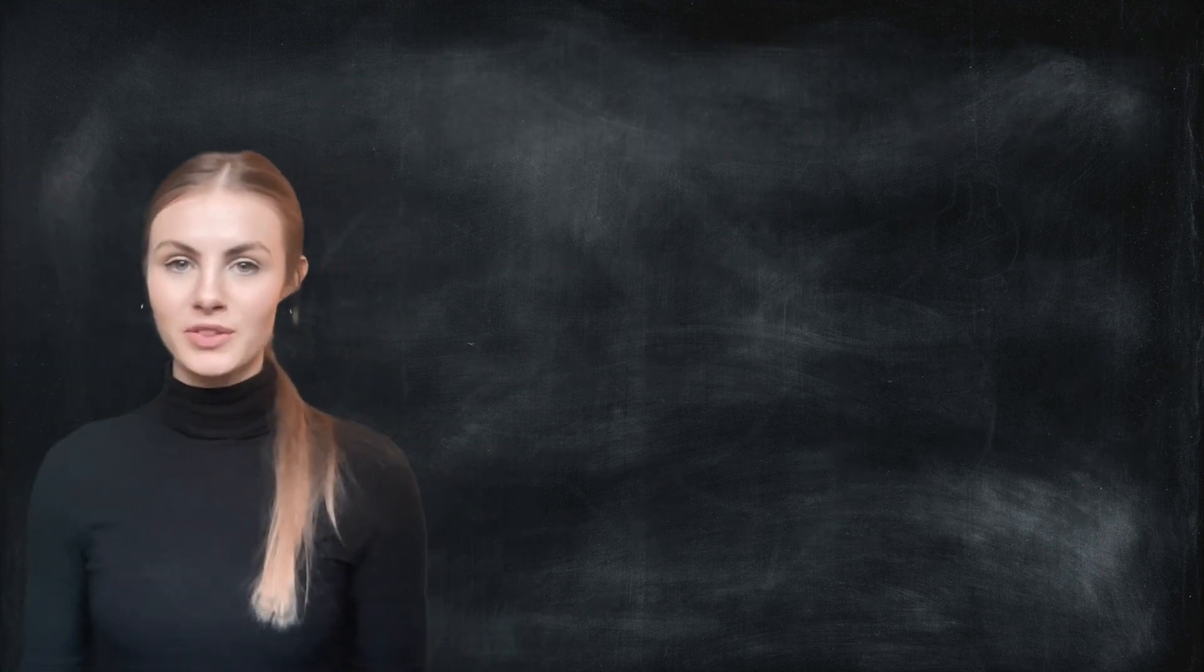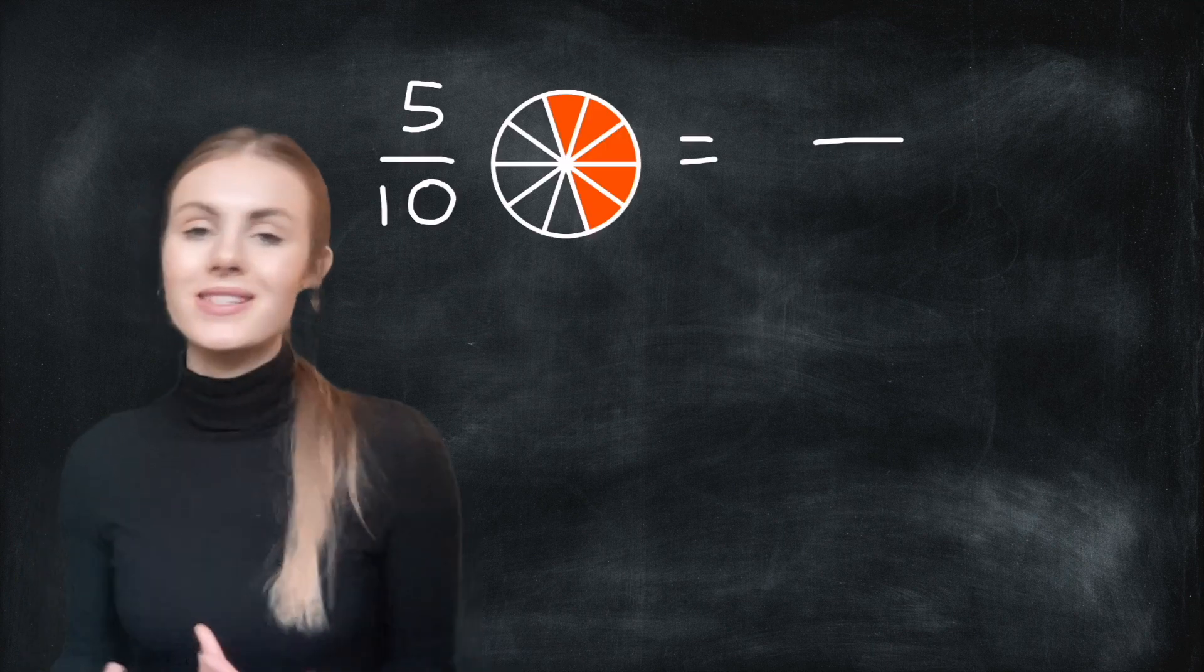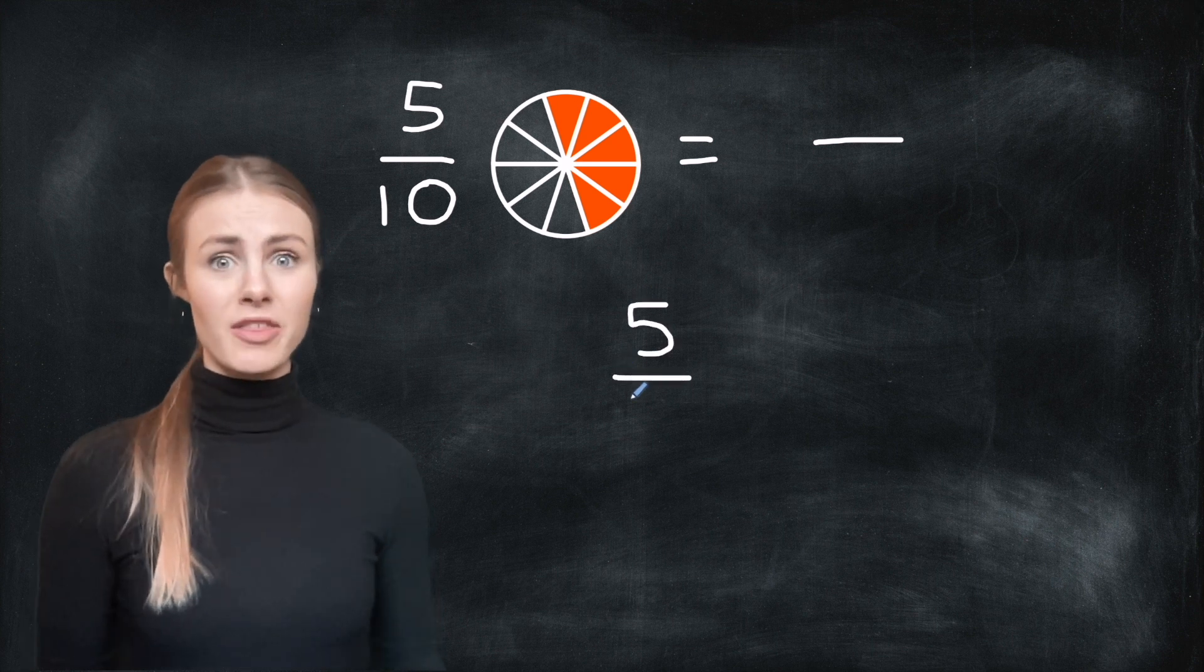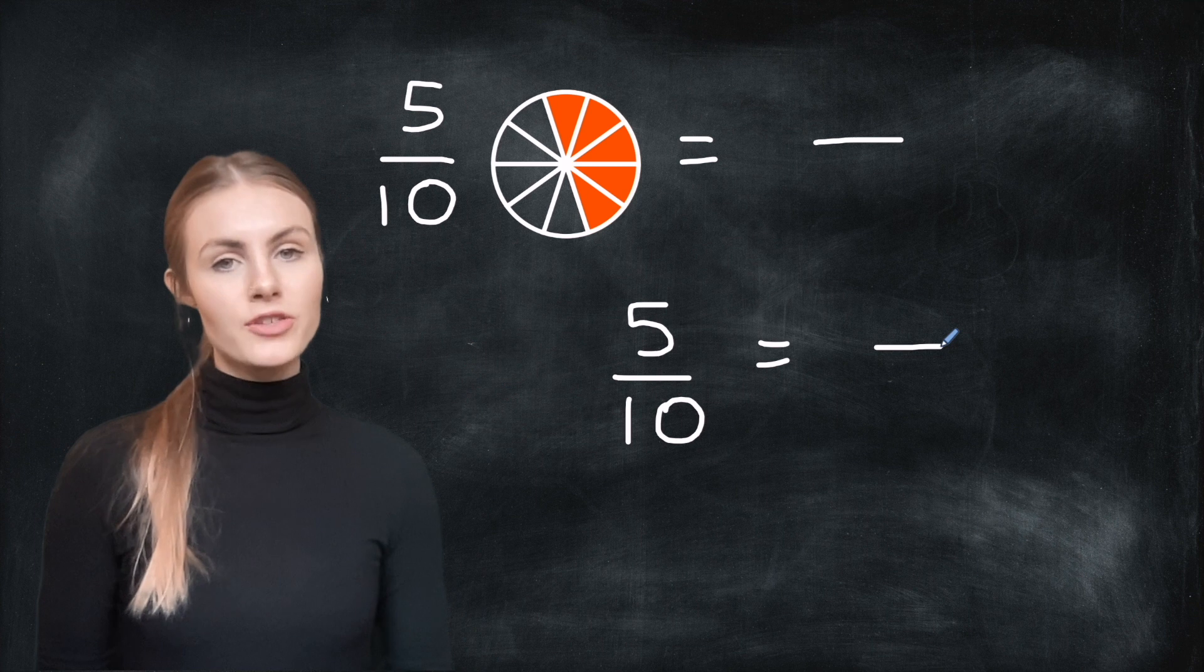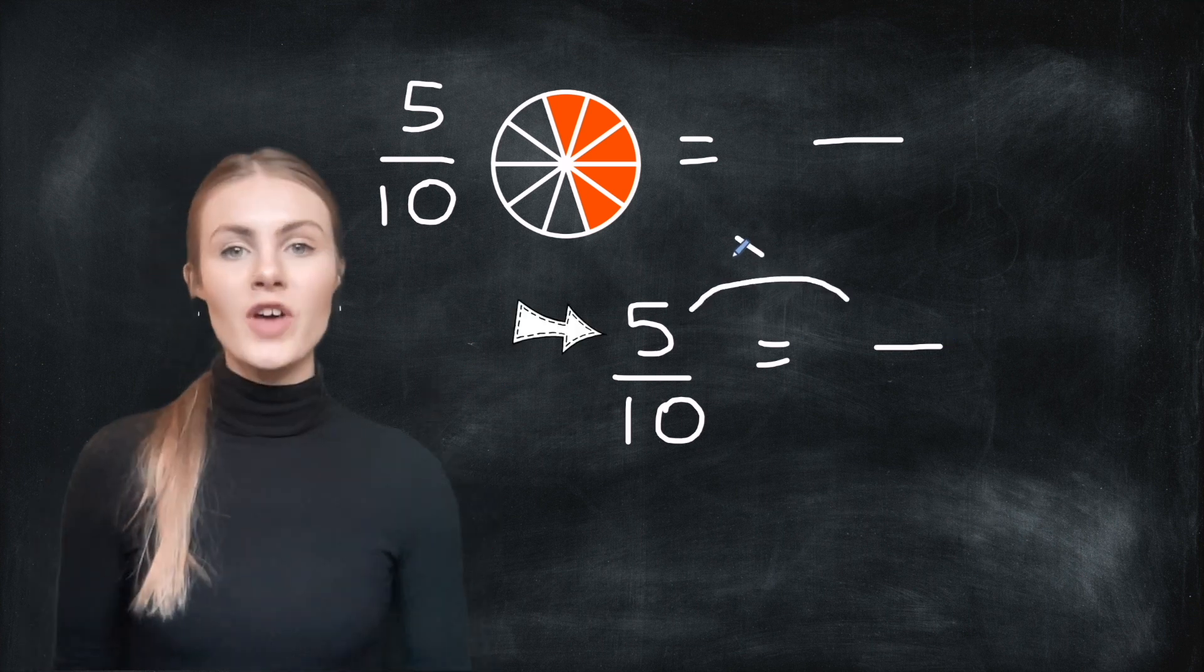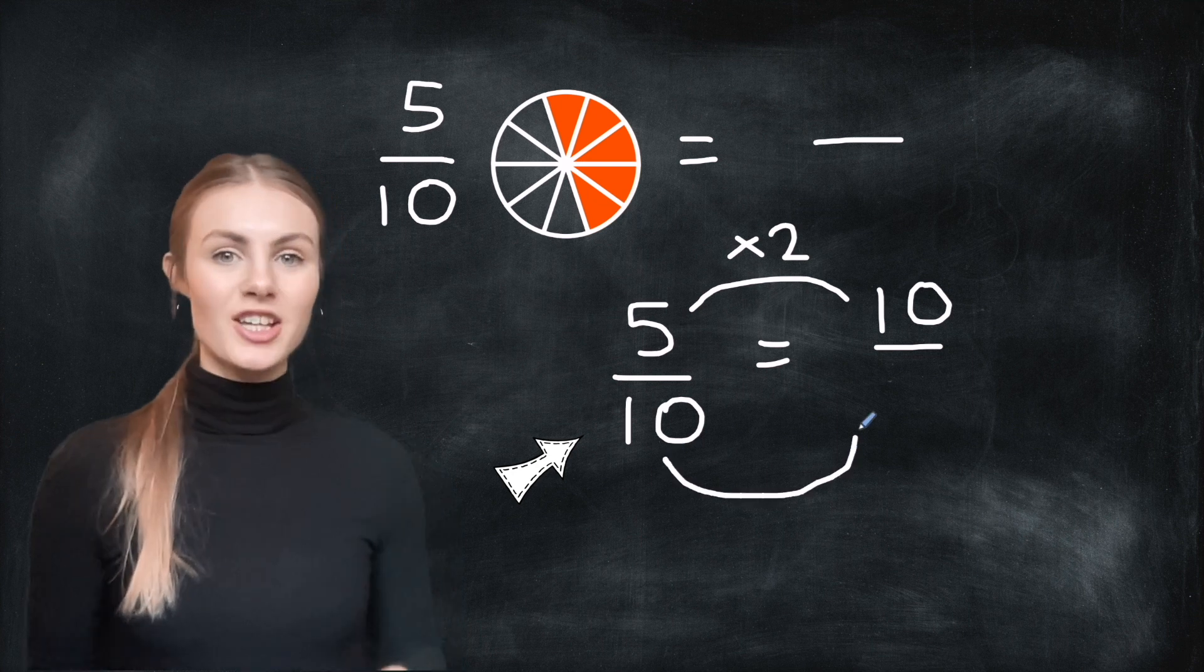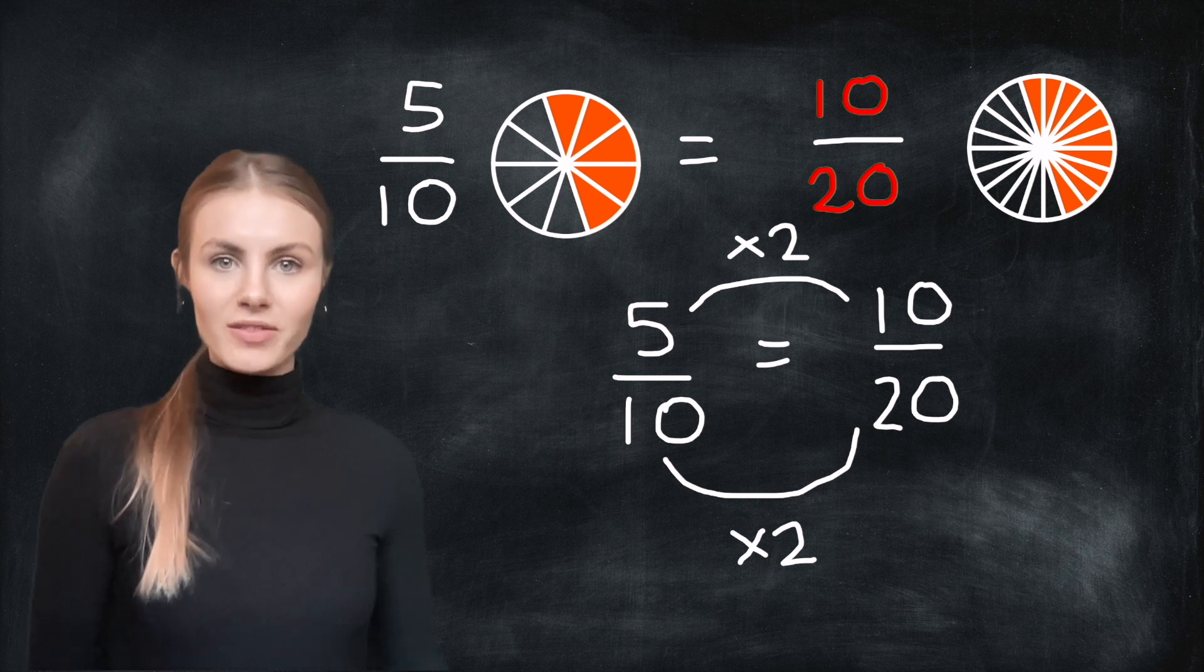Let's have a look at another example. Let's find equivalent fraction to five tenths. Something that's the same size as five tenths but uses different digits. Okay, so let's use our really easy method. We're going to multiply the whole fraction by two. So let's start with our top number. Five times two is ten. Then we'll multiply our bottom number. Ten times two is twenty. So we've got ten twentieths and this is the same size as five tenths.